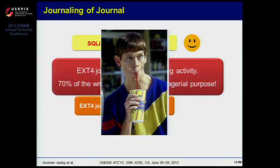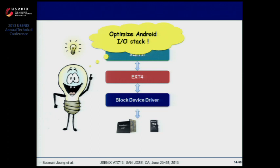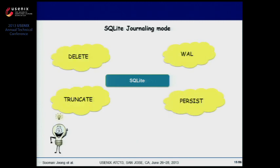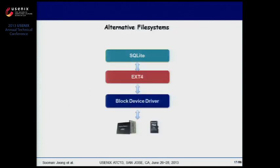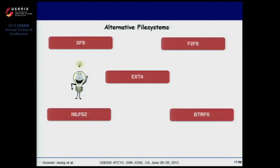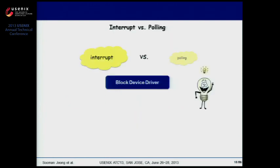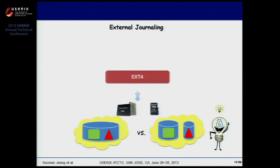Now let's have a brief overview of ideas on how to improve the inefficient operation of SQLite and EXT4. First, we compare the performance of various SQLite journaling modes to see which is most suitable for smartphones. Next, by replacing SQLite fsync with fdatasync, we try to minimize metadata pressure. Then, we try to find alternative file systems for EXT4. Next, instead of interrupt-driven I/O, we developed a polling-based I/O and applied it to the Android platform. Lastly, we saved the file system journal in separate storage and compared performance with the previous method.